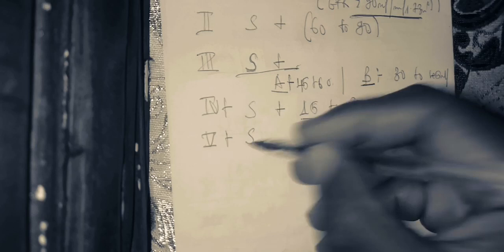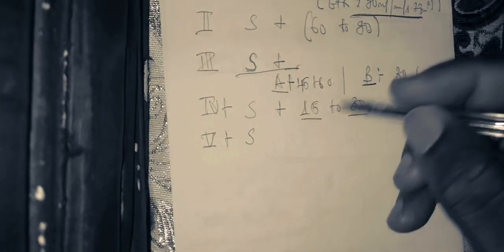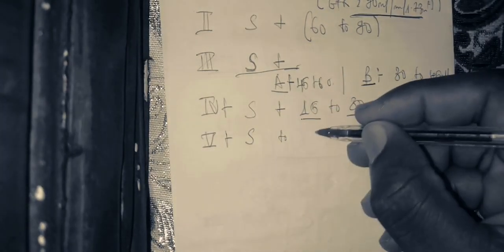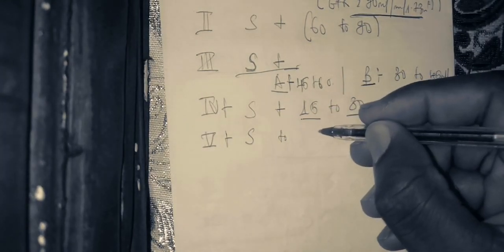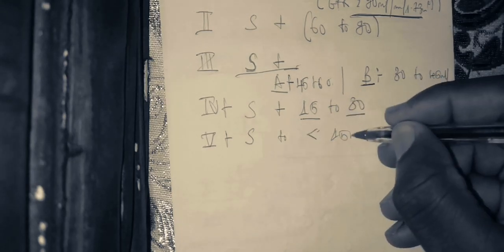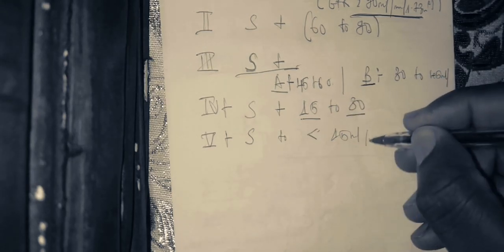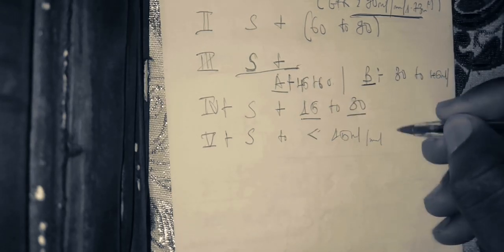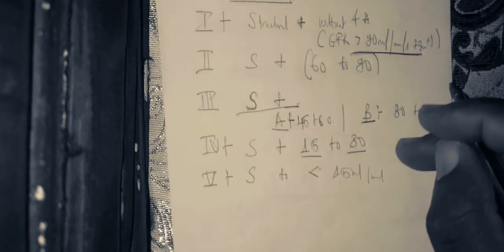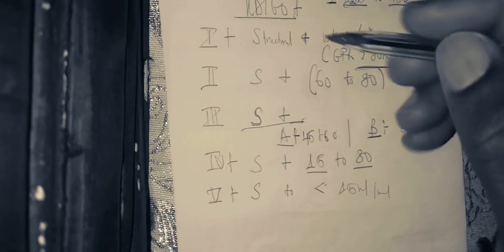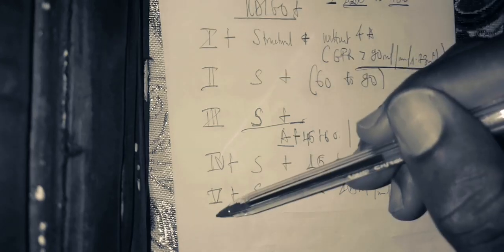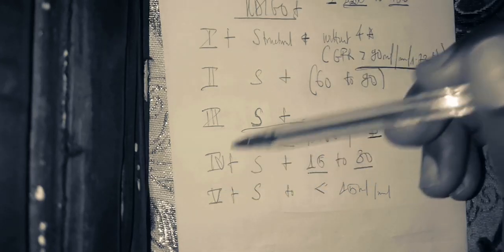For CKD Stage 5, we have a structural abnormality with a functional abnormality — a glomerular filtration rate of less than 15 mls per minute per 1.73 m². That covers the CKD classification.